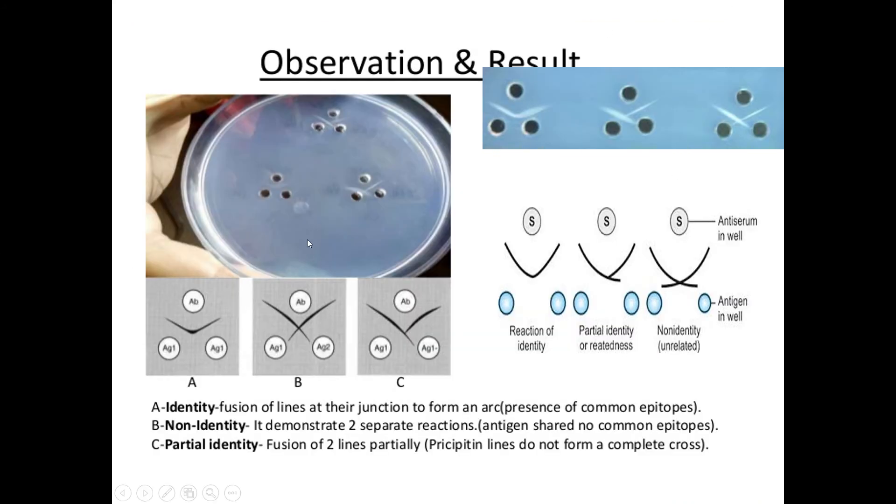Load 10 microliters of antiserum A in the well, and in the bottom wells, antigen A1 and antigen A2. Similarly, 10 microliters of antiserum B and accordingly antigen B1 and B2. Lastly, 10 microliters of antiserum C and accordingly antigen C1 and C2.